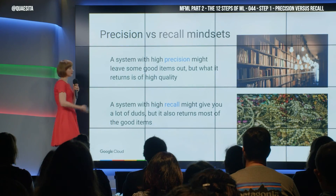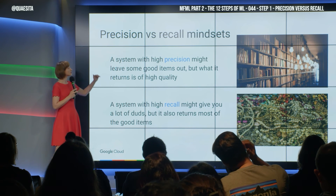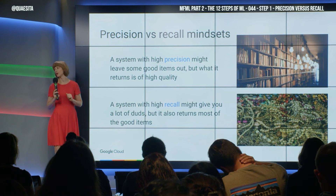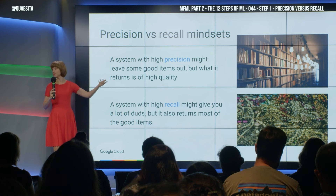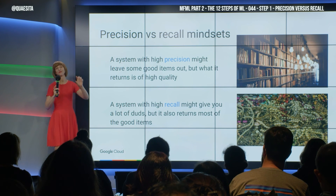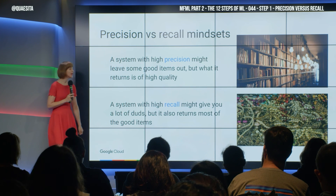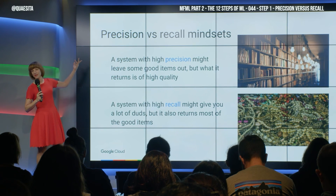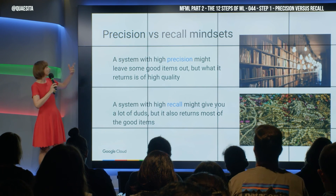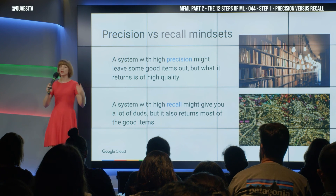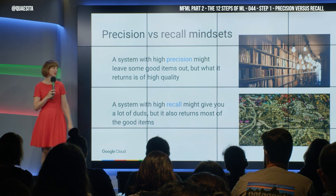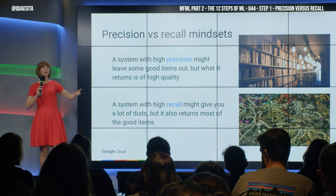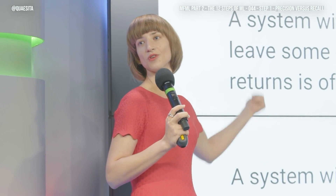It depends very much on your application which one you want to go for. To summarize: a system with high precision is going to leave good things out, but what it returns is of high quality. A system with high recall gives you a lot of duds — a lot of plastic jewelry — but it returns most of the good items. You don't have to go for one or the other, or even accuracy. There's something called an F-measure — that's just a way of balancing precision and recall, the harmonic mean between them. You are allowed as a business decision maker to choose what is important to your business problem, and let that be the metric you pick.